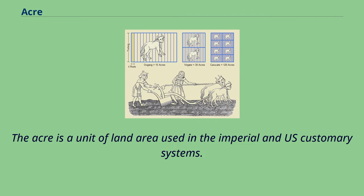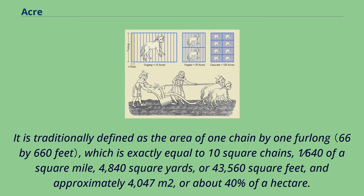The acre is a unit of land area used in the imperial and U.S. customary systems. It is traditionally defined as the area of one chain by one furlong, which is exactly equal to 10 square chains, 1/640th of a square mile, 4,840 square yards, or 43,560 square feet, and approximately 4,047 square meters, or about 40% of a hectare.